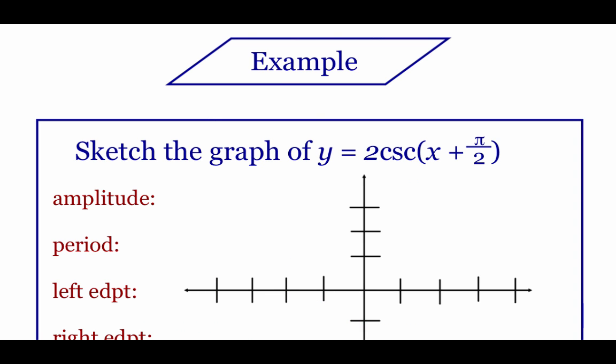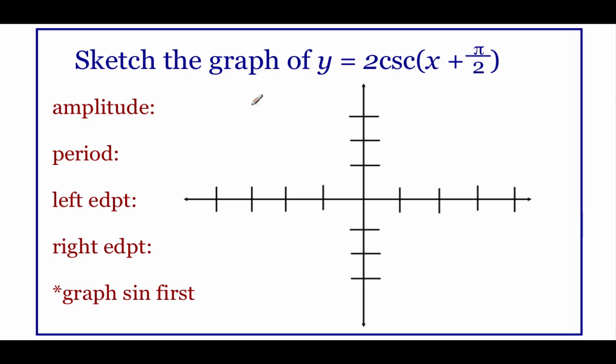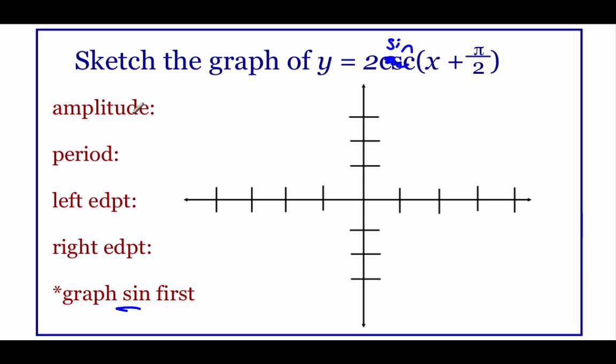So in this first example, we're going to graph out y equals 2 cosecant of x plus π over 2. Now we know that cosecant is related to sine, so I'm actually going to pretend that this equation says sine in it. We're going to graph out a sine equation first. So running through all of our stuff, the amplitude, we look at the absolute value of the number out in front, that's going to be 2. There's not a vertical shift on this one, so I'm going to put a dotted line at positive 2 and down at negative 2 as my guidelines.